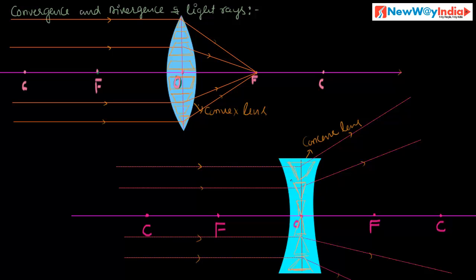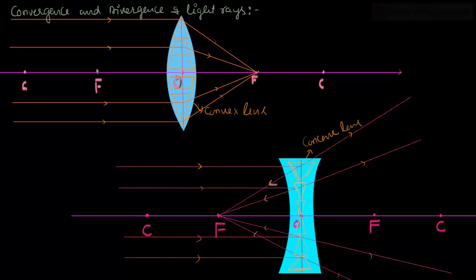If we extend these deviated rays backward, they meet at one single point. That means these rays appear to diverge from this point — this is called divergence. These rays are divergent rays, and this phenomenon is called divergence of light rays. This point is called the principal focus of the concave lens. In the case of a concave lens, the light rays appear to diverge from the principal focus. This is the divergence and convergence of light rays.